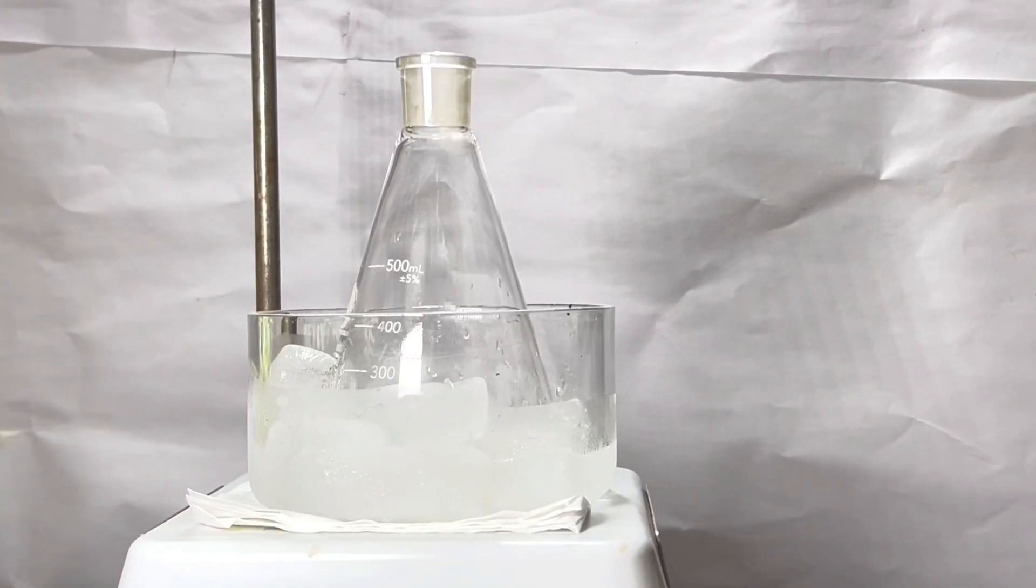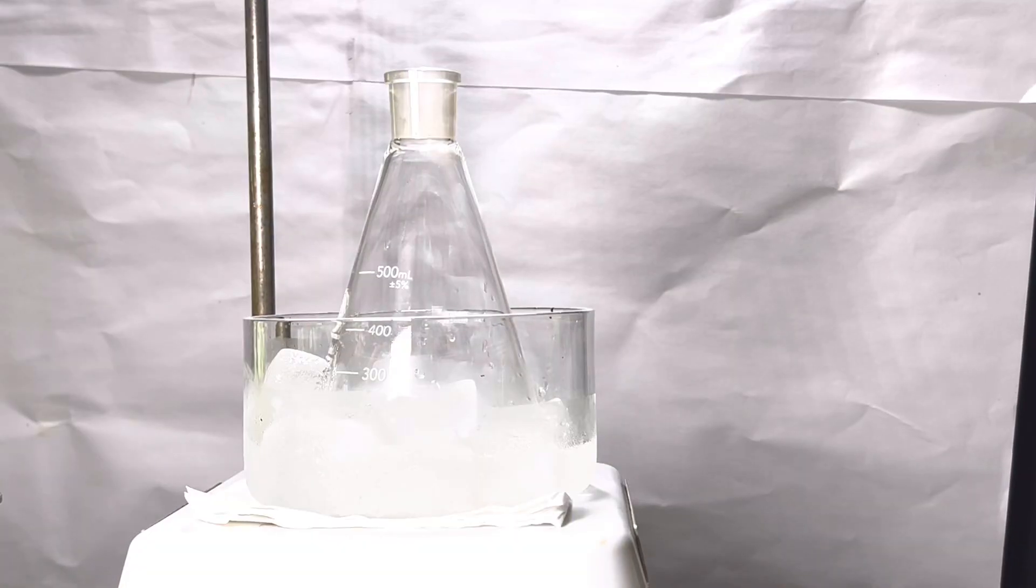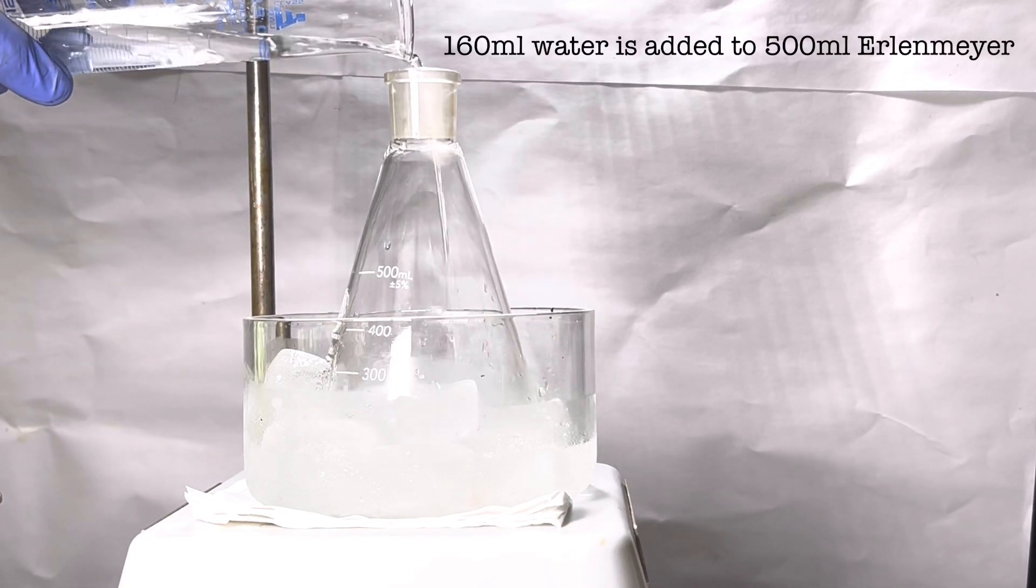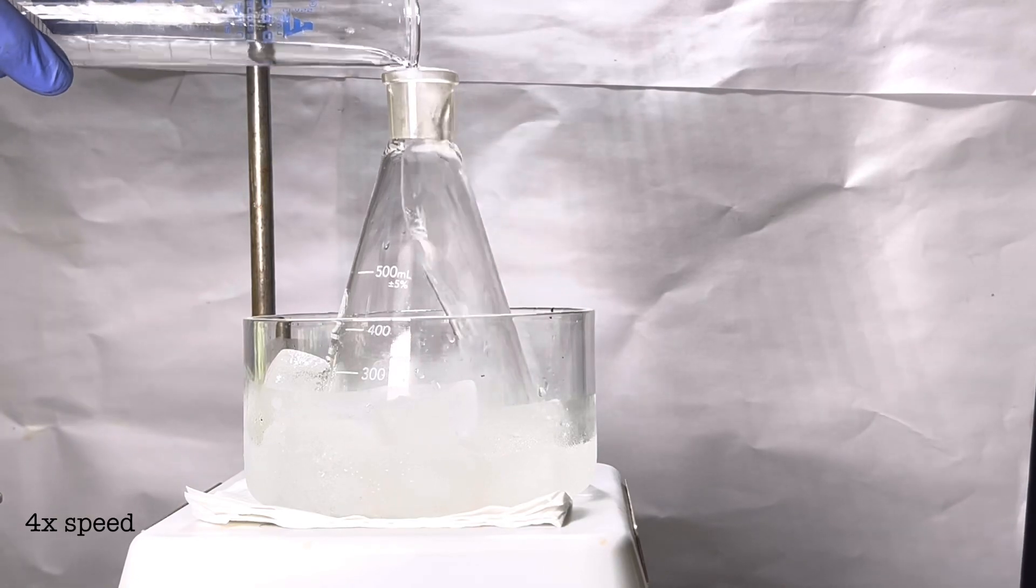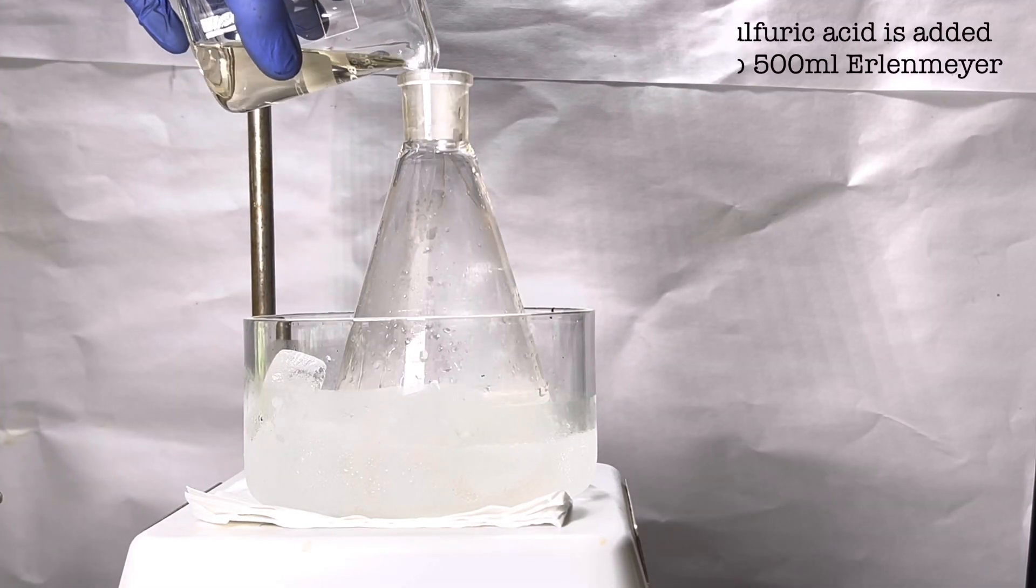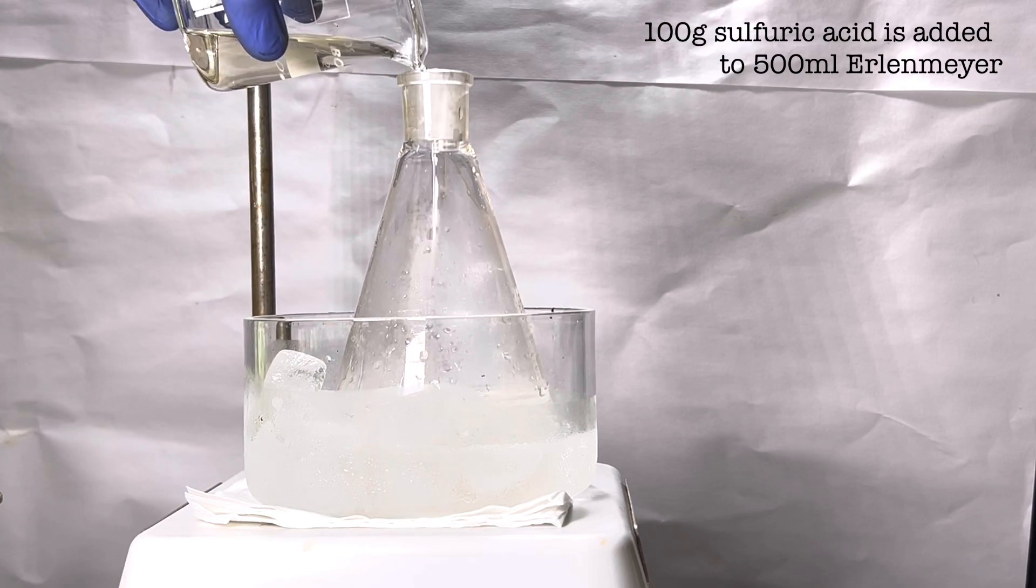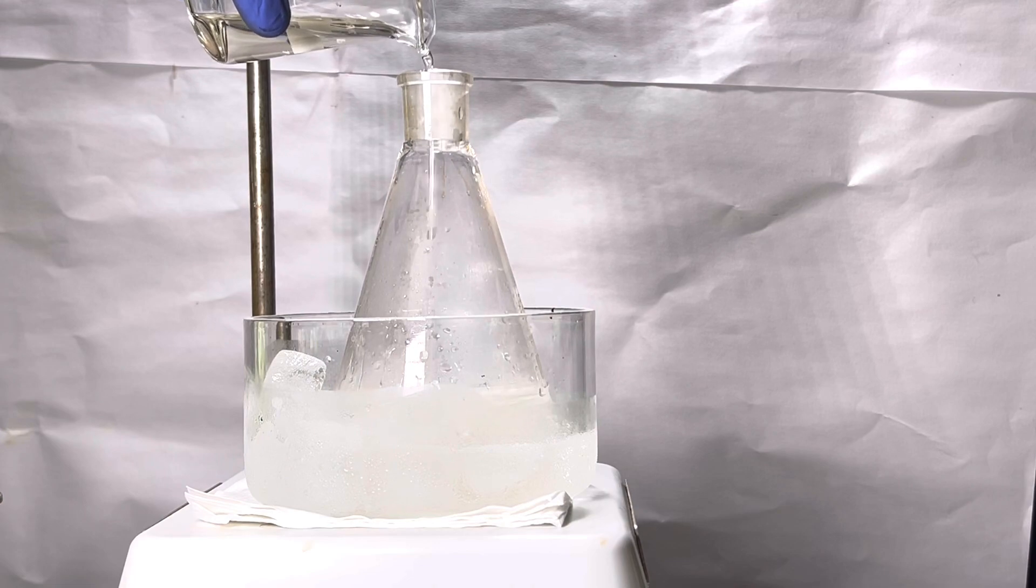A 500 milliliter Erlenmeyer was placed in an ice bath over a hot plate stirrer. A stirring bar was introduced and 160 milliliters of water was added. After the water cooled to below 10 degrees Celsius, with stirring turned on, 100 grams of concentrated 98% sulfuric acid is added slowly to the Erlenmeyer.